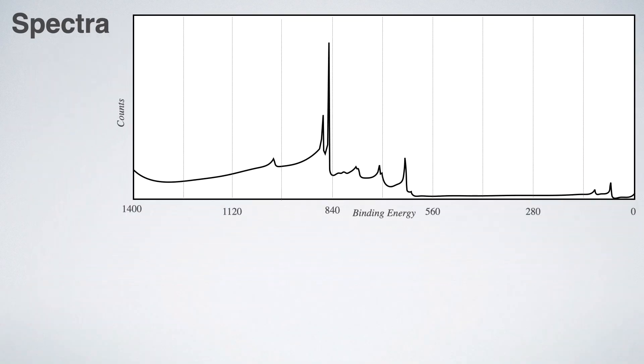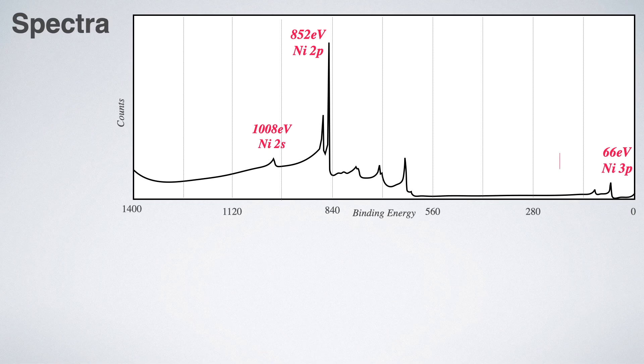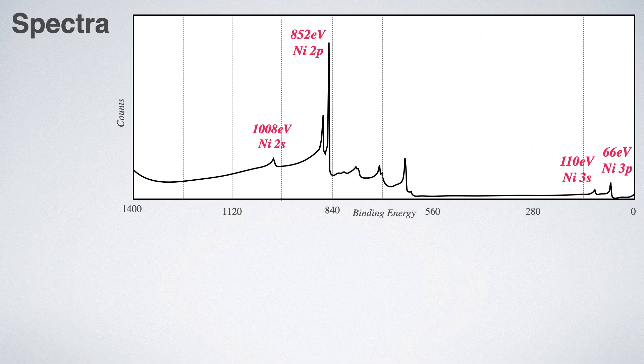And the peaks coming at different binding energies can be compared to the actual electronic configuration of the element. For example, here in the image, you can see the XPS spectra of nickel and at higher binding energy of 1008 electron volt comes nickel 2s peak. Then at 852 electron volt comes nickel 2p followed by nickel 3s peak at 110 electron volt and finally at 66 electron volt for nickel 3p peaks.